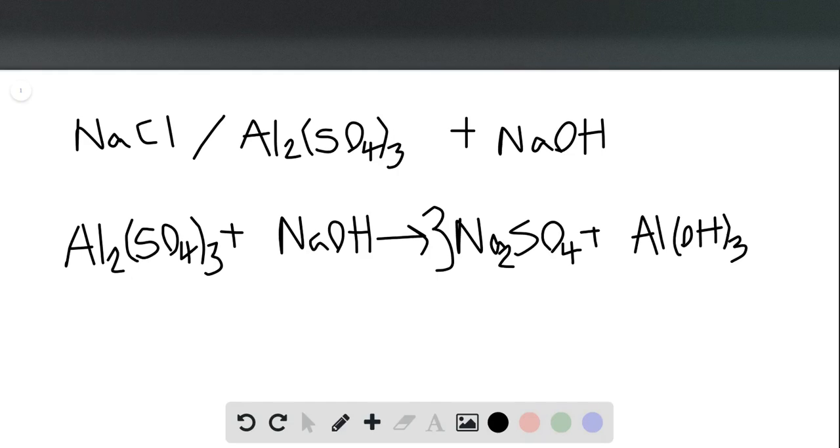When I do that, though, that changes the number of sodium atoms I have. So now I have six in my products and just one in my reactants. So I'm going to put a coefficient of 6 in front of sodium hydroxide, which now gives me six hydroxide ions. I only have three over here, so this gets a coefficient of 2, which works out perfectly because now I have the same number of aluminum atoms in my reactants and products. So this is the balanced chemical reaction for this precipitation reaction.